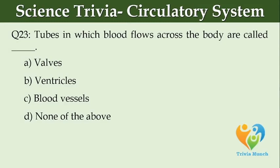Tubes in which blood flows across the body are called blank. Option A: valves. Option B: ventricles. Option C: blood vessels. Option D: none of the above.